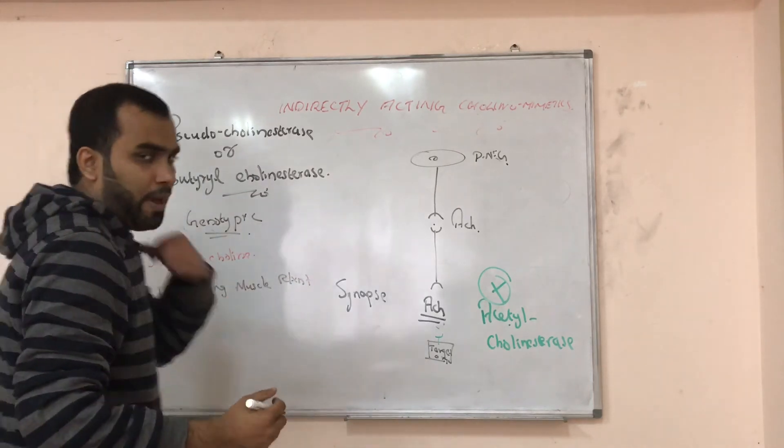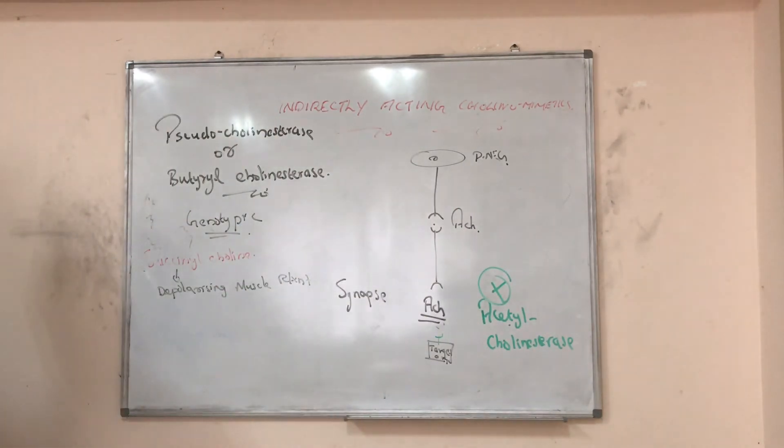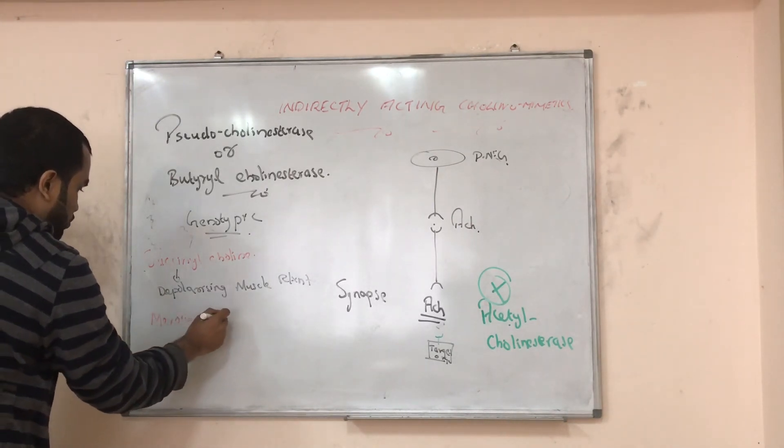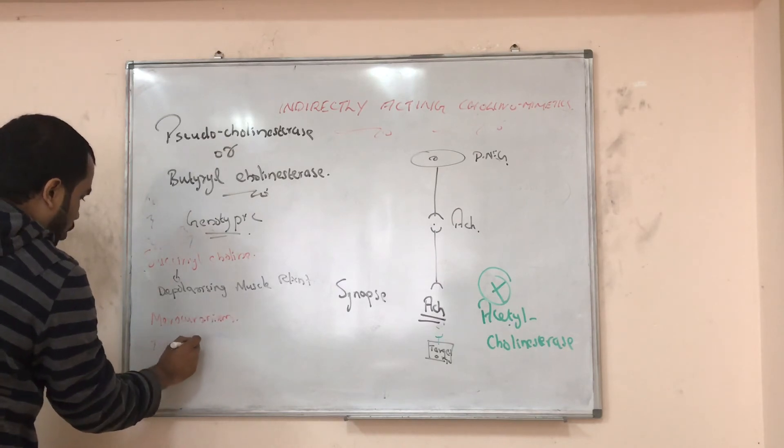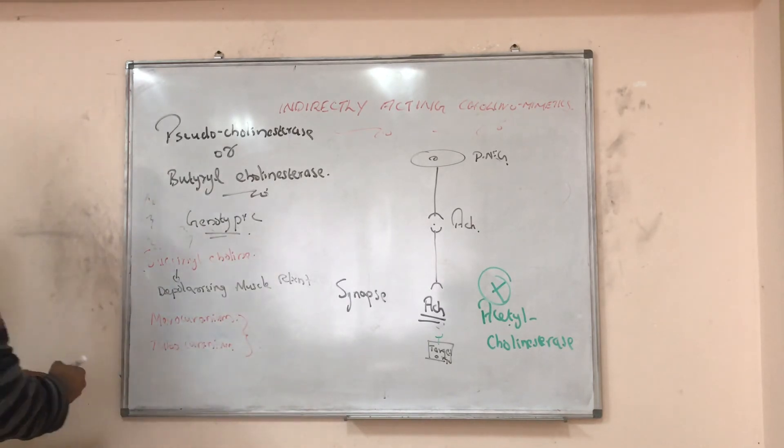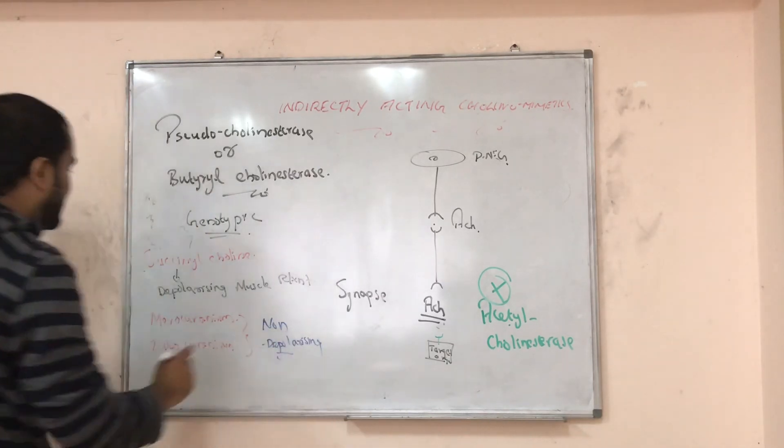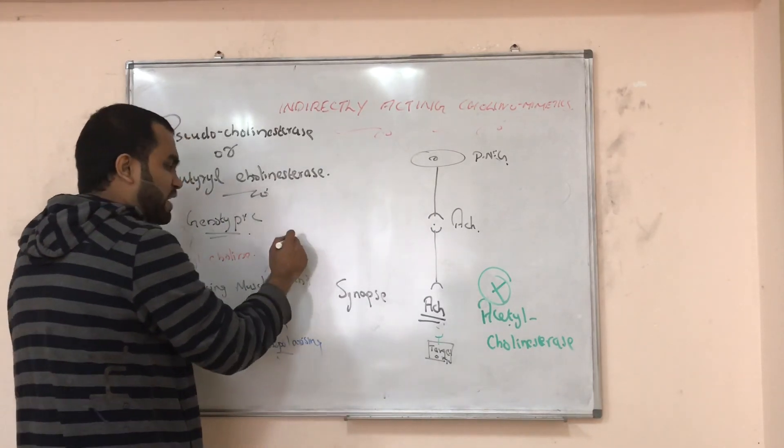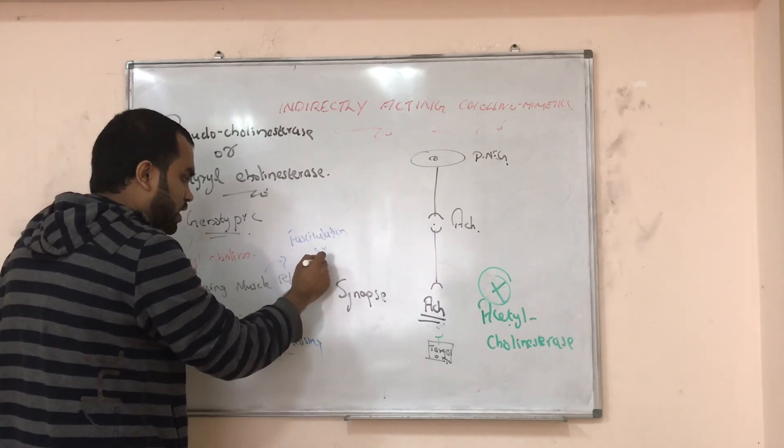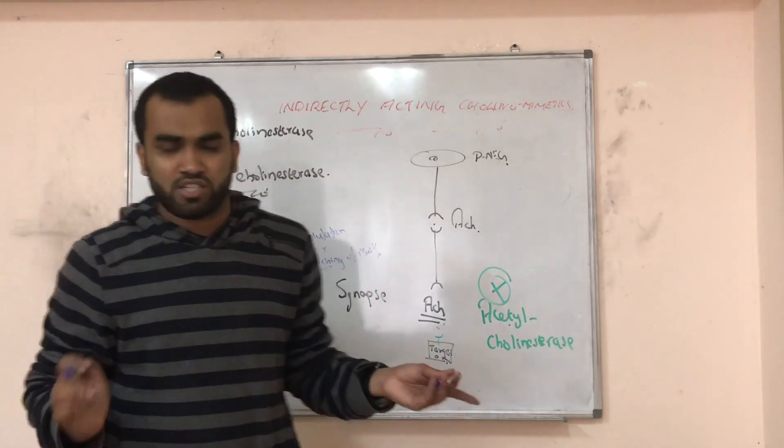So in tracheal intubation, we are putting some pipe inside trachea, right? So for doing that, we relax the muscle here. We will give succinylcholine. Or we will give mivacurium, tubocurare, atracurium. These all are muscle relaxants. But this comes under curarium groups. They are non-depolarizing. Depolarizing means they will use some ion channels. So the typical symptom you see in depolarizing is fasciculation or twitching of muscles in that area. Non-depolarizing doesn't use ion. So there is no fasciculation or twitching.